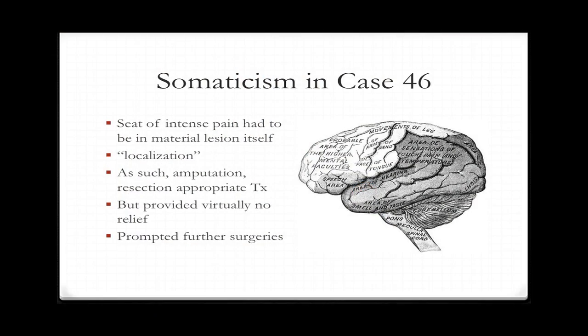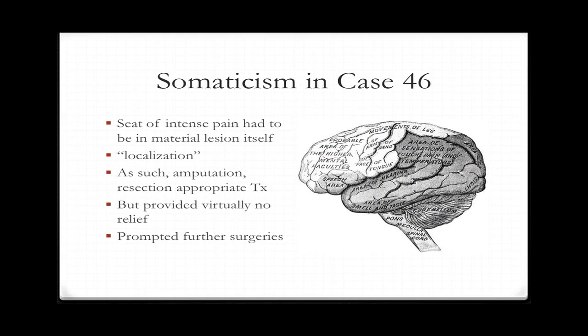Here we see somaticism in action: the seat of intense pain had to be in the material lesion itself. Each resection not working prompted going further up the leg, and eventually the original amputation at the lower third effectively results in the leg being completely removed. This is also about localization — an extremely important component of somaticism, particularly powerful among neurologists. Phrenology is an outgrowth of this significance of localization, the idea that parts of our personalities are attributable to certain areas of the brain.